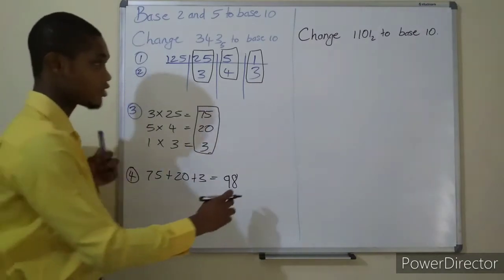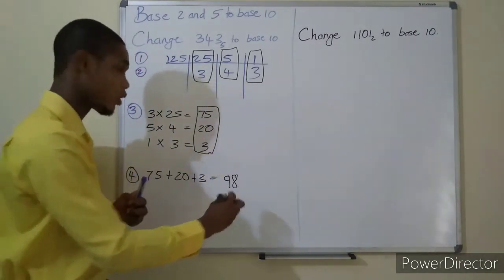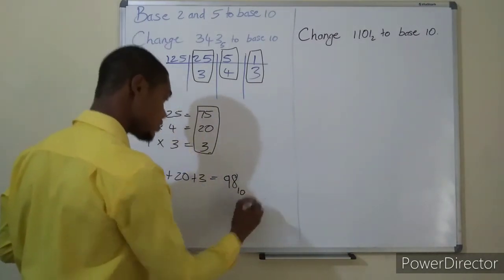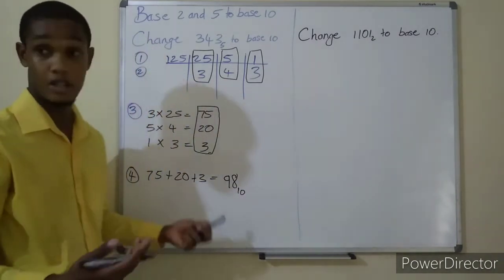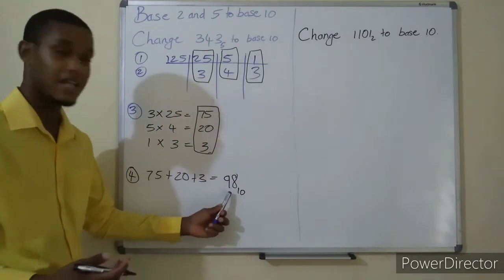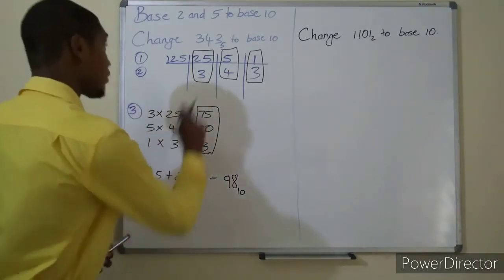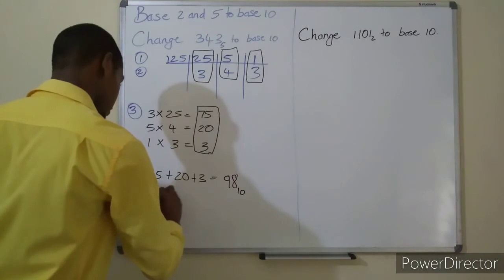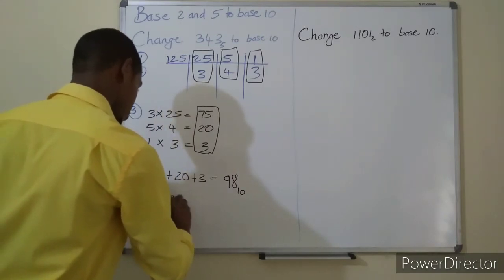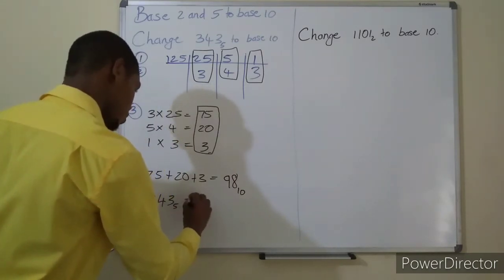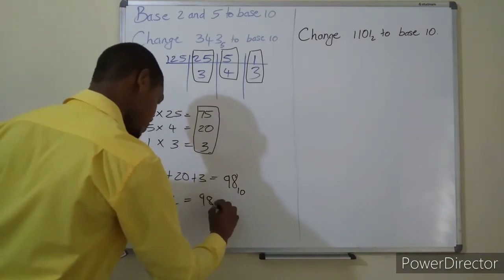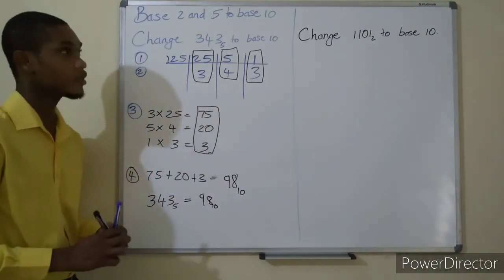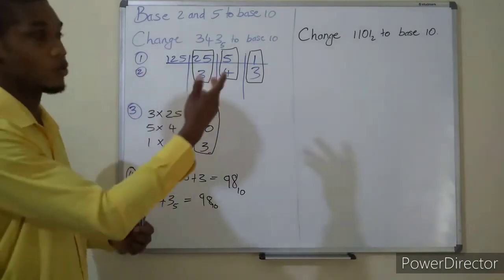That is equal to 75 plus 20, that's 95, plus 3, that gives you 98. When you get your answer, you can either write out the word base 10 or you can put the 10 beneath it. For your answer, 343 base 5 is equal to 98 in base 10.